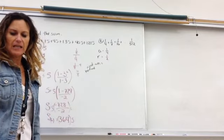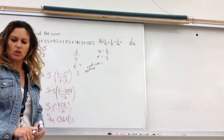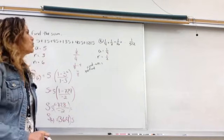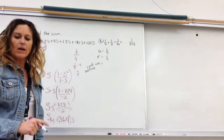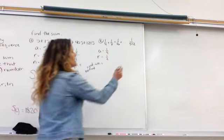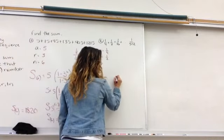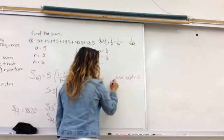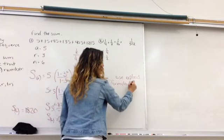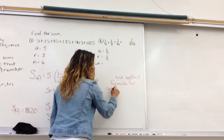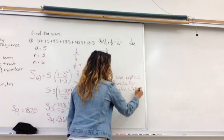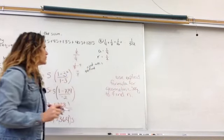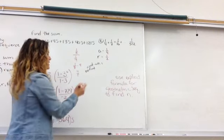Now, n. In this case, n is a little bit of a challenge. I need to know how many terms are in the sequence. I need to know how I got to 1 over 512. So I'm going to use my explicit formula to find n.